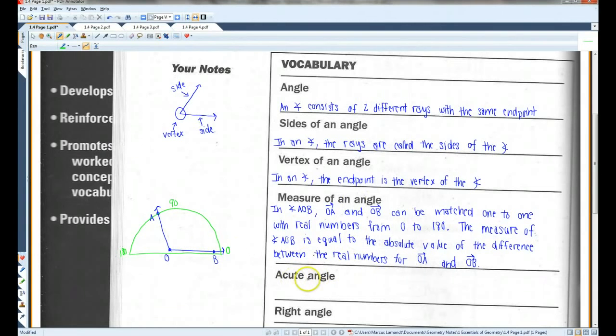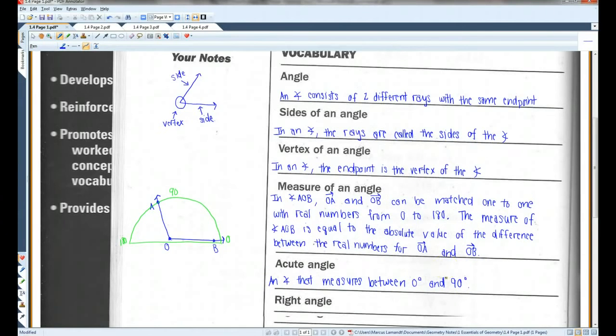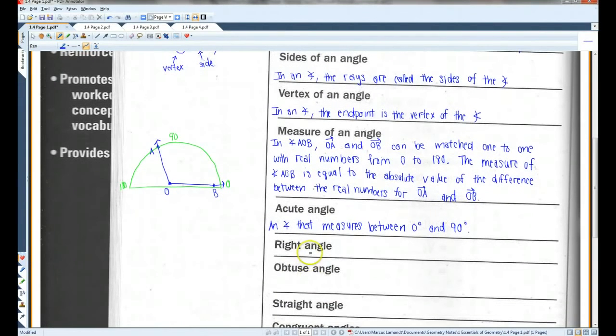Acute angles are angles that are less than 90 degrees. Once again, this little symbol is angle. The little circle next to the number represents degrees. I think most of you guys know that, but just in case someone doesn't. A right angle is an angle that measures exactly 90 degrees.